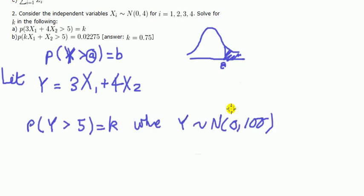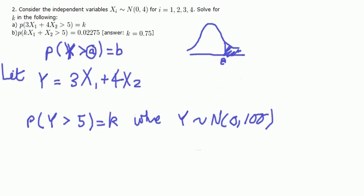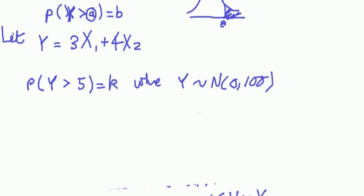So this is where we're at. This question can be expressed in this form. Probability of y bigger than 5 equal to k where y is normally distributed, mean of 0 and a variance of 100. And now you can recognize that this is the kind of things that you've seen before. So we'll just standardize it and look up the table. It's everything you've seen before.